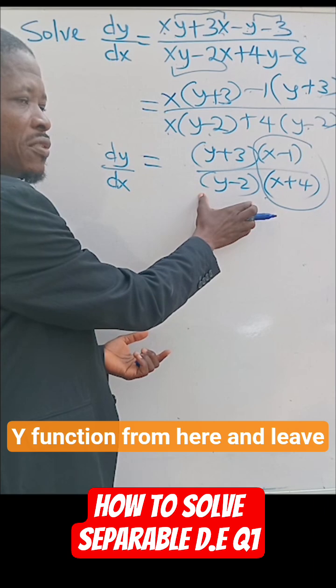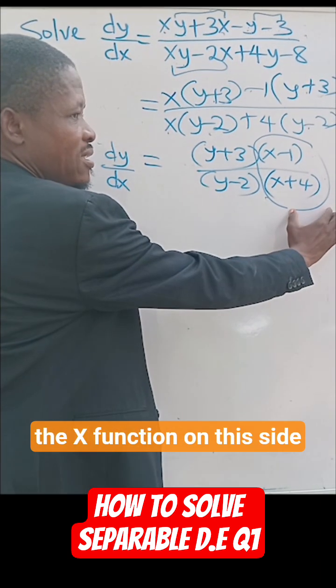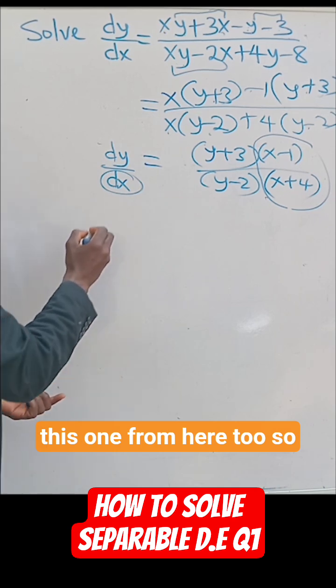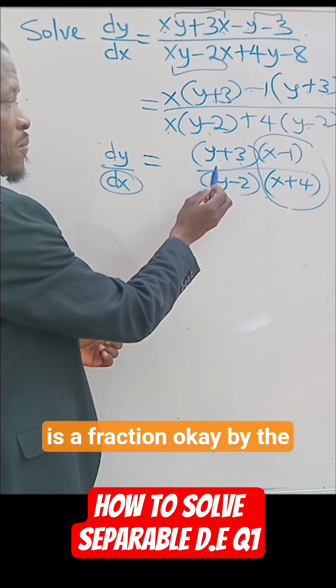We also remove the y function from here and leave the x function on this side. And at the same time, remove this one from here too. So we're going to have—don't forget that this one is a fraction.